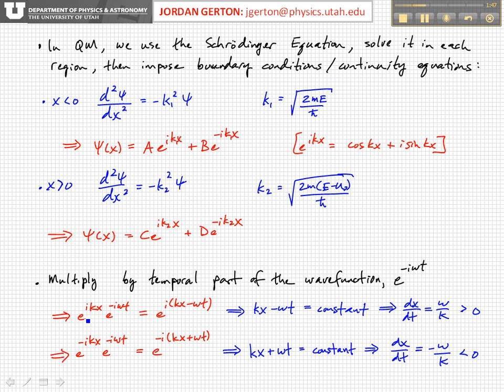And so in a general way, if we have a solution that is e to the plus ikx, we multiply by e to the minus i omega t, then what we get is e to the i times (kx minus omega t). And if you think about this, if you set this phase here—this is, again, a plane wave. And if we set this phase equal to a constant...